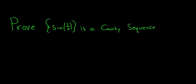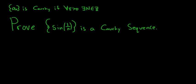Before we do the proof, let me recall what it means for a sequence to be Cauchy. We say a sequence a_n is Cauchy if for all epsilon greater than 0, we can find some positive integer, say capital N, such that for all little n and little m bigger than capital N, we can make the distance between a_n and a_m arbitrarily small — smaller than epsilon.